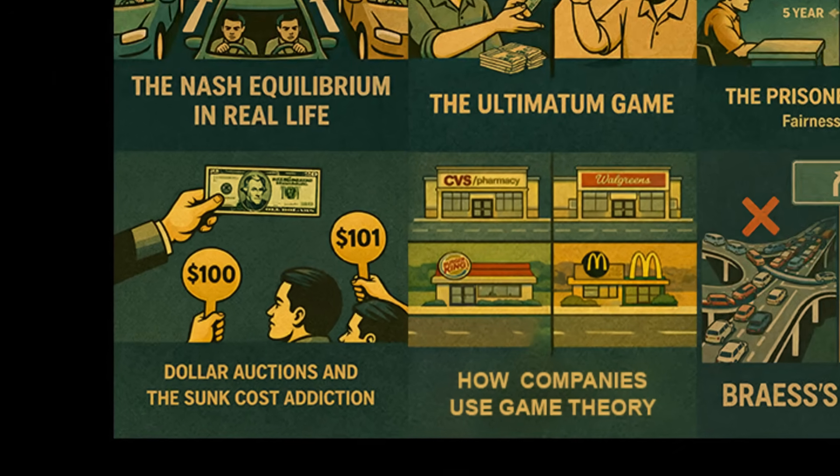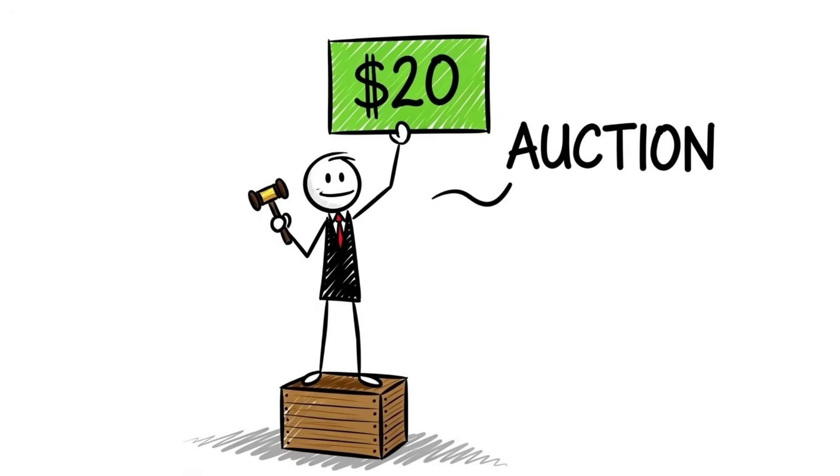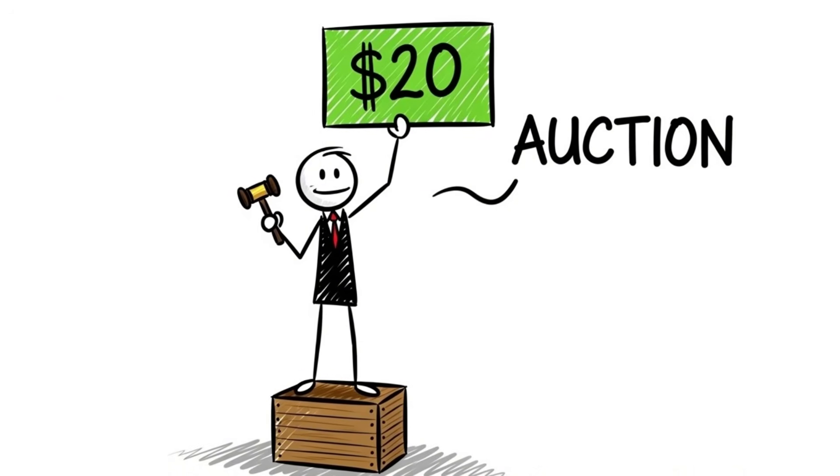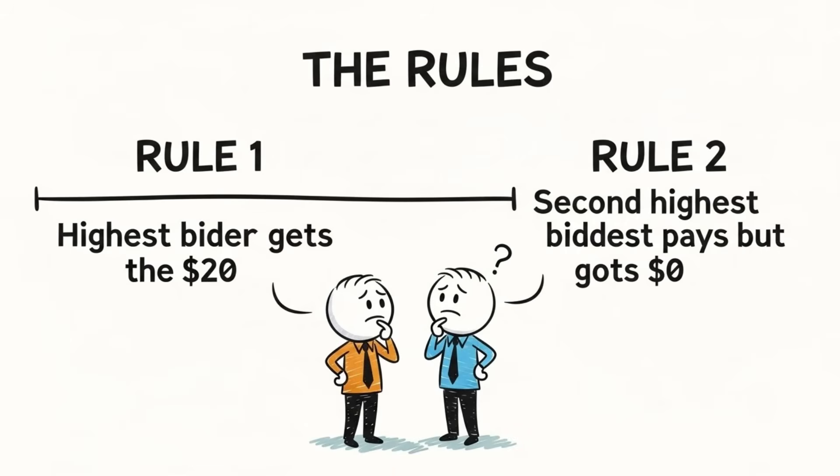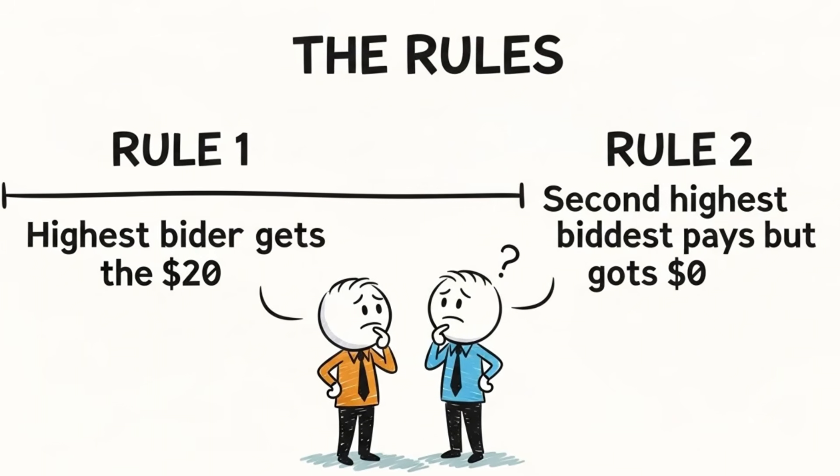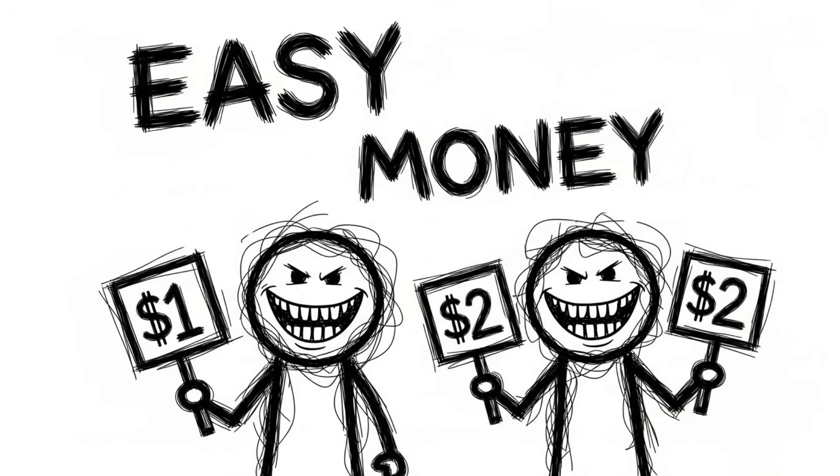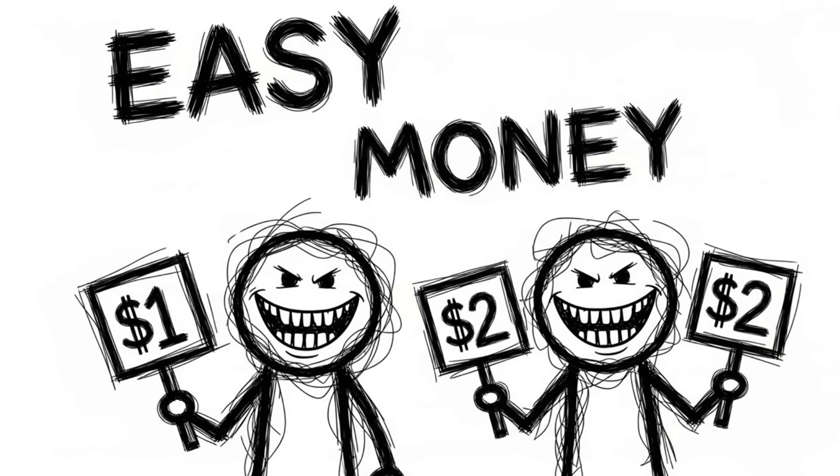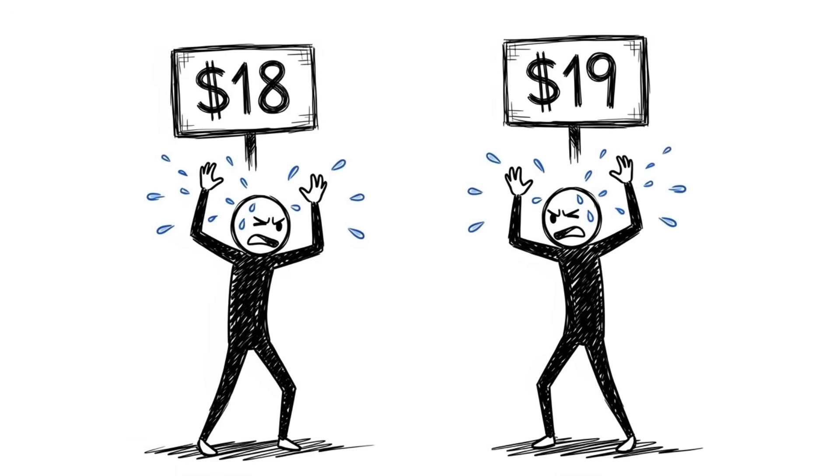Dollar auctions and the sunk cost addiction. Here is a party game that will ruin your friendships. It's called the dollar auction. I hold up a $20 bill and say I am going to auction this off to the highest bidder. The rules are simple. The highest bidder gets the $20, but the second highest bidder must also pay me their bid, and they get nothing in return. The bidding starts innocently. A dollar, two dollars. It's free money. But eventually, the bidding hits $19 against $18.